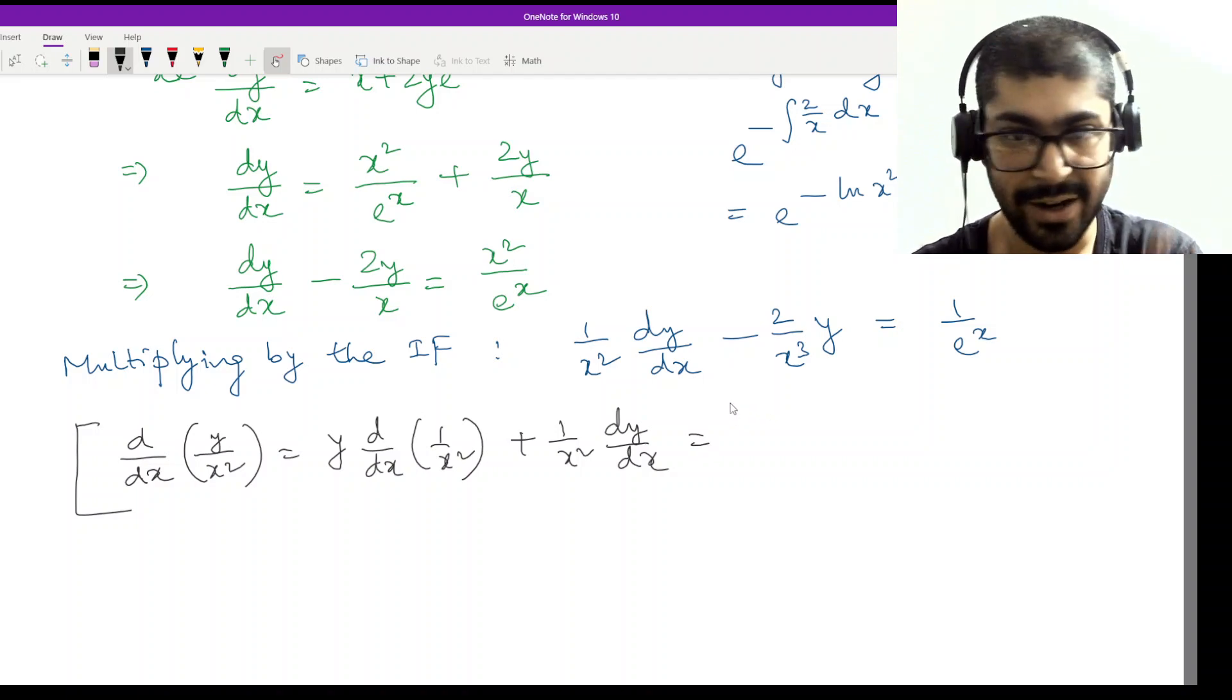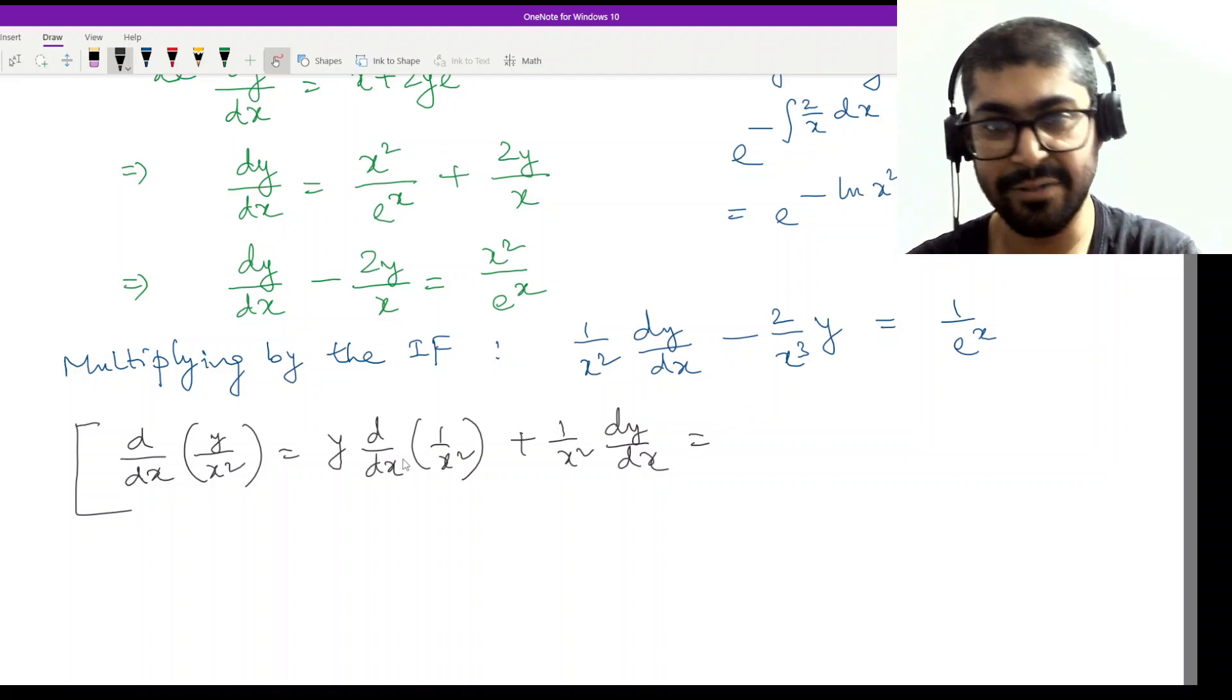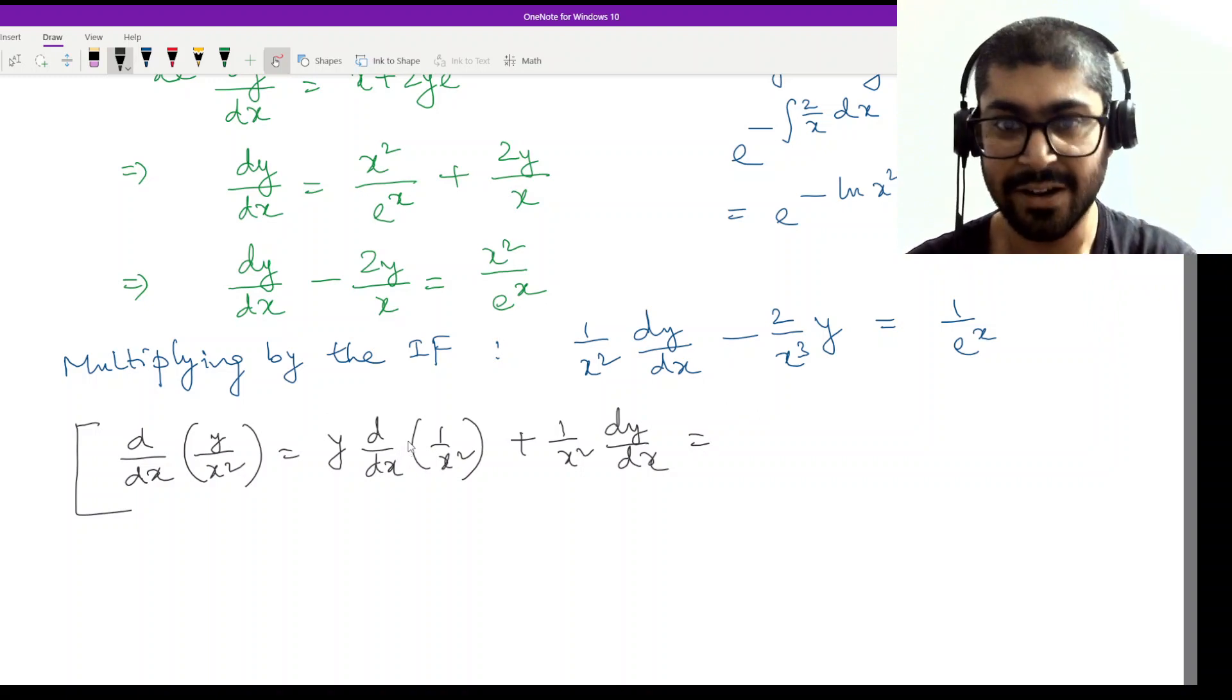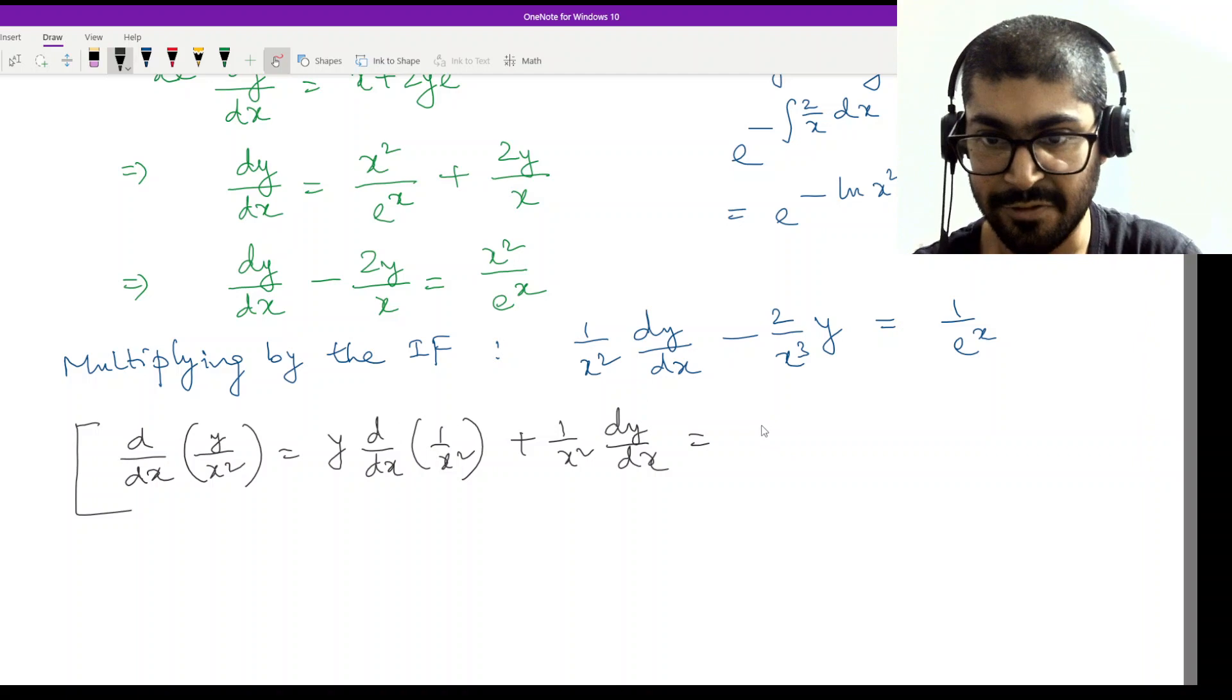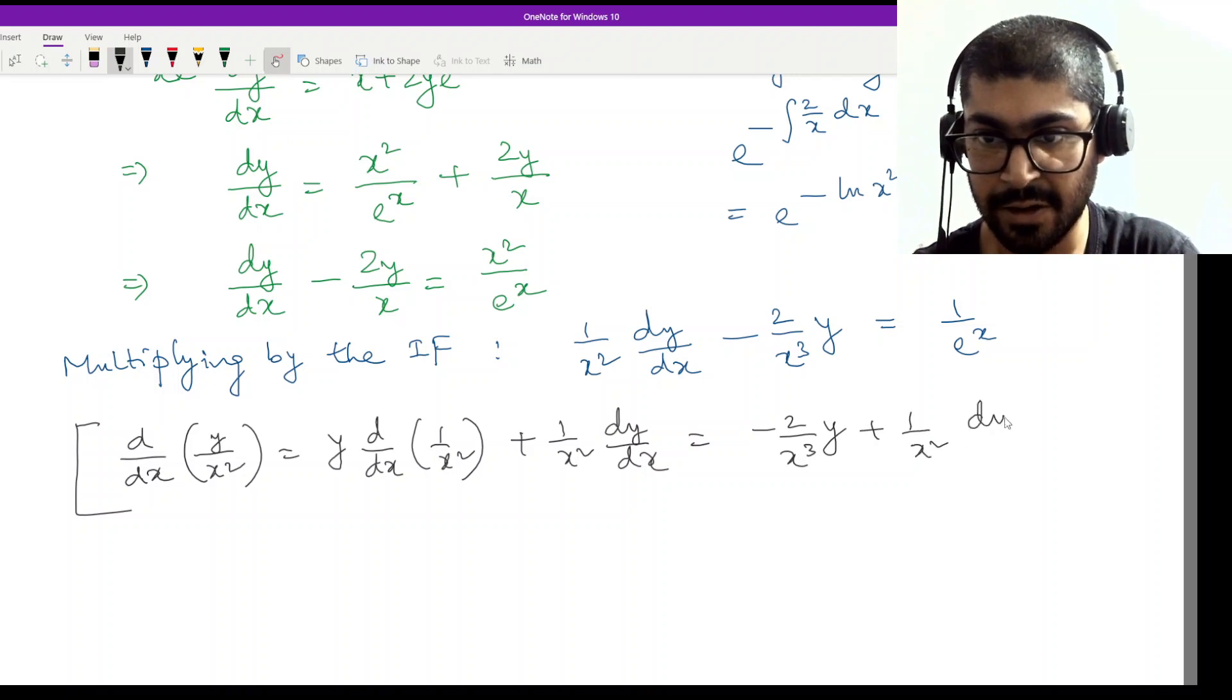So it will be (1/x²)dy/dx. Now if you take the derivative of 1/x², what will you get? x^(-2), so it will be -2x^(-3), which means -2/x³ y and 1/x² dy/dx.